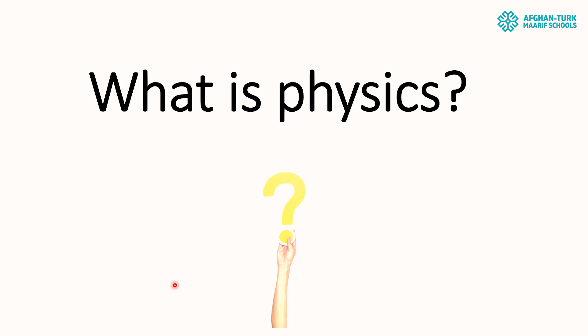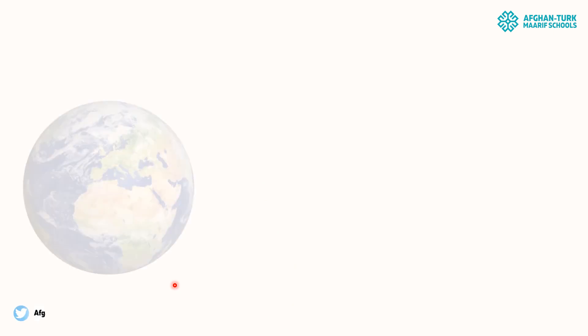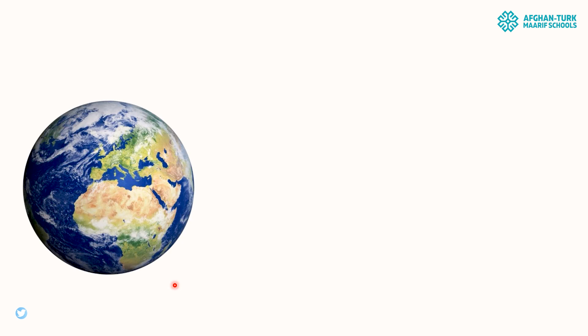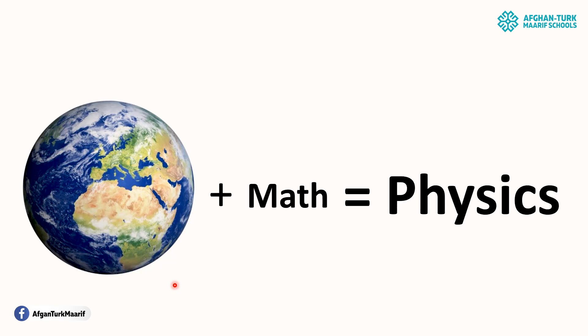What is physics? What is the meaning of physics? The meaning of physics is nature. In simple terms: nature plus math is equal to physics. The universe plus math is equal to physics. You understood the meaning of physics — the meaning is nature.